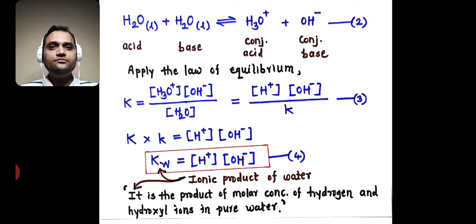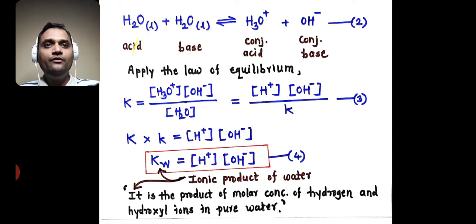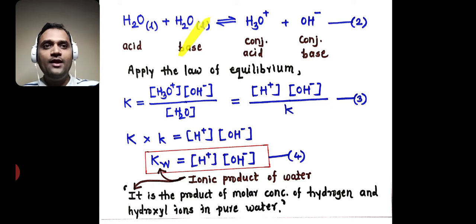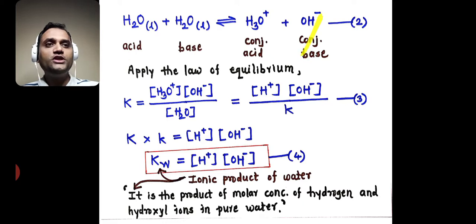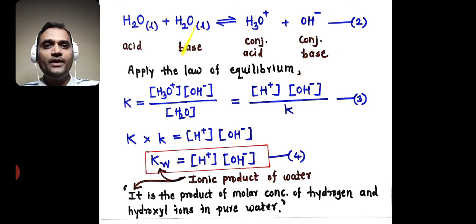Now see the reaction. In this reaction, water acts as an acid as well as a base. When it acts as an acid, it gives H+, and that H+ is taken by the water which acts as a base. After giving H+, that H2O becomes OH-, and by abstracting the proton, that H2O becomes H3O+. So this acid gives H+ and forms conjugate base, and that H2O takes H+ and forms conjugate acid.